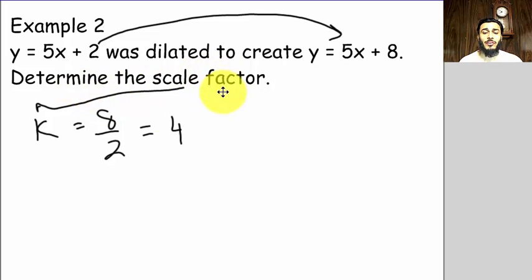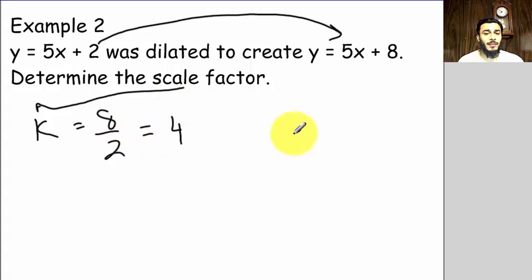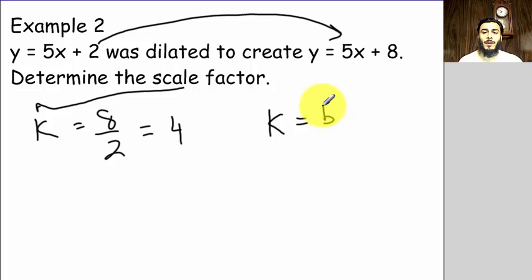We get four. So the scale factor is four — two times four is eight. To summarize: to get the scale factor, use the formula k equals the new y-intercept divided by the old y-intercept.